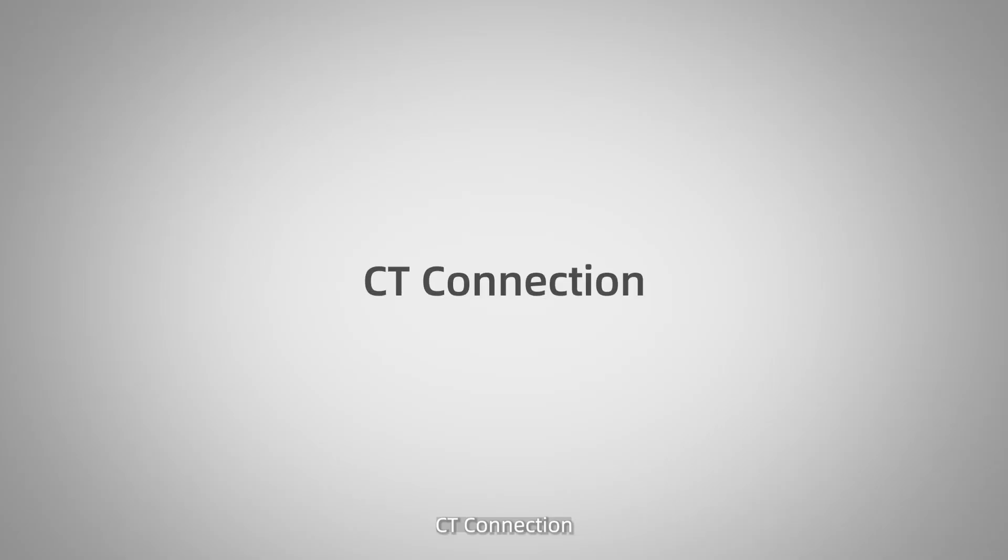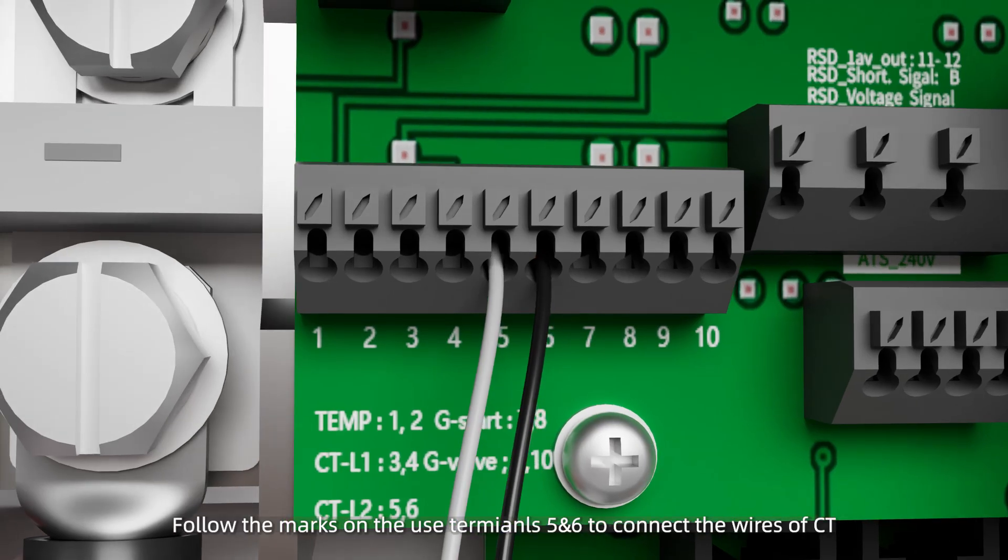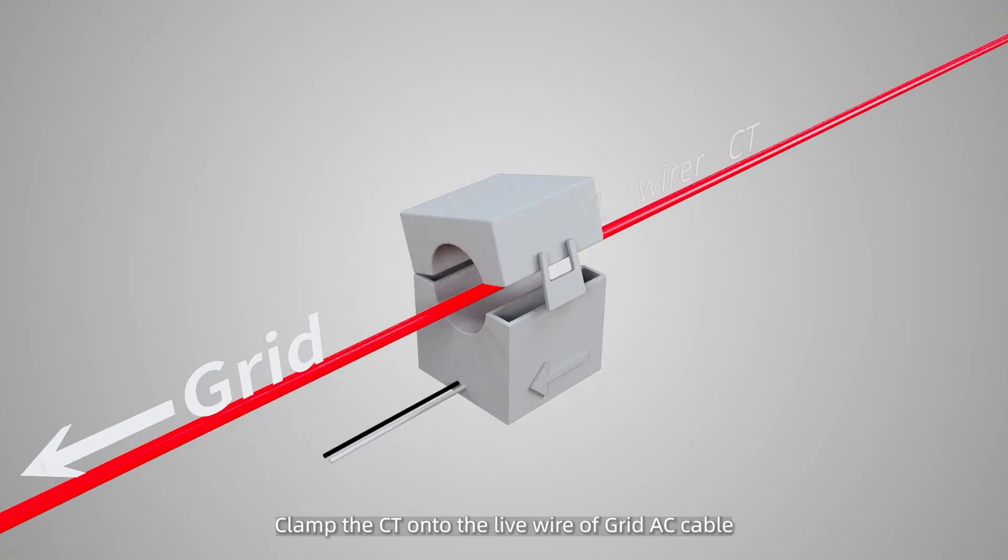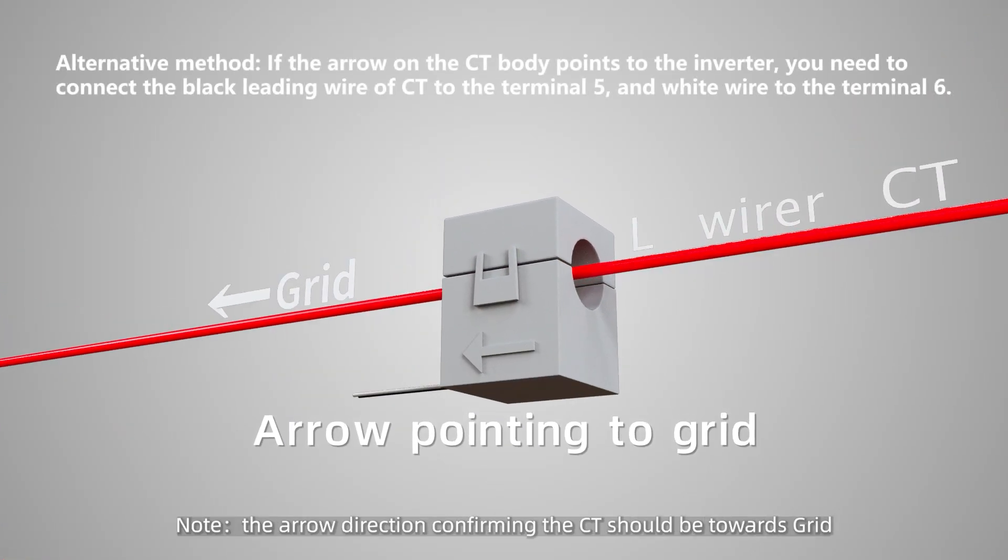CT connection. Follow the marks on the use terminals 5 and 6 to connect the wires of CT. Clamp the CT onto the live wire of grid AC cable. Note, the arrow direction confirming the CT should be towards grid.